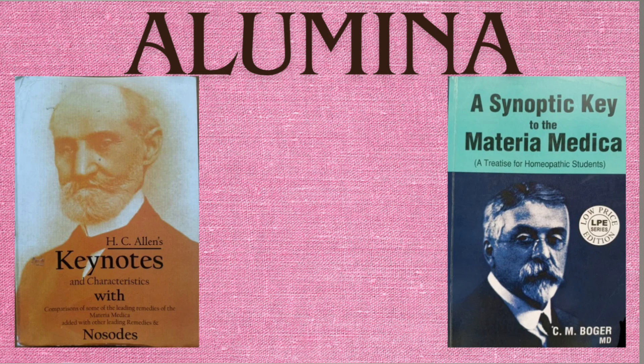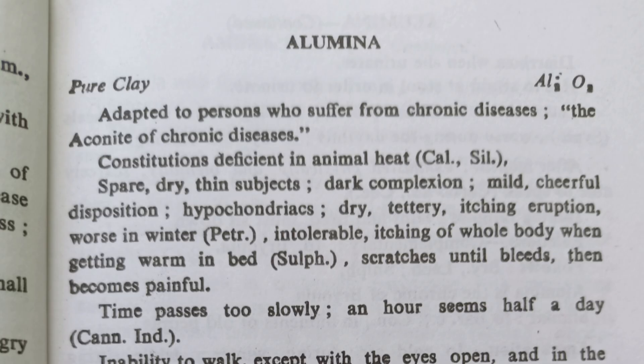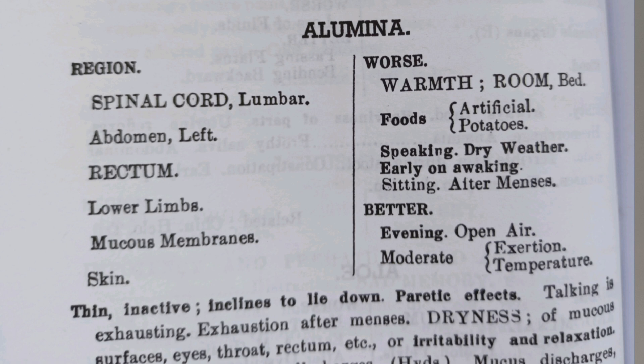Today we will study Alumina. Alumina is the oxide of aluminium. It is known as the aconite of chronic diseases because it is adapted to persons who suffer from chronic diseases. Boger Synoptic Key has a lot of modalities, especially causative modality and general modality.